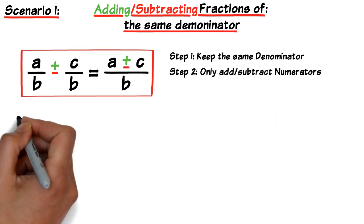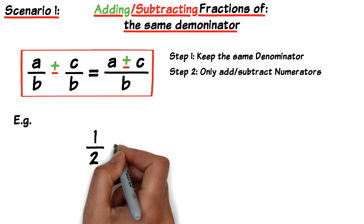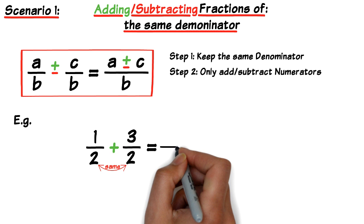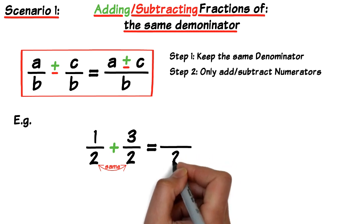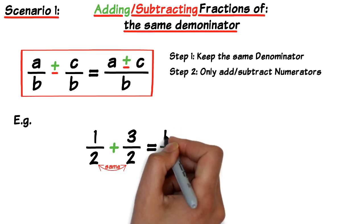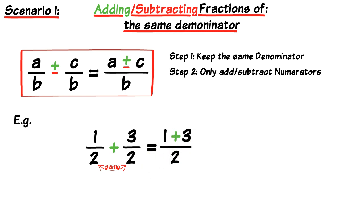So for example if we have the fractions 1 over 2 plus 3 over 2. We first check to see if the denominators are the same. In which case they are. So the new denominator becomes over 2. And the numerator will just be the addition of 1 plus 3. So 1 plus 3 equals 4. So the new fraction becomes 4 over 2. Or 4 divided by 2. Which in this case is just 2.